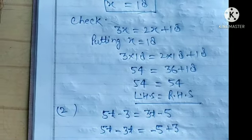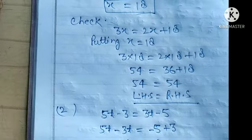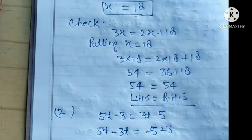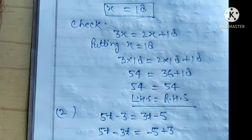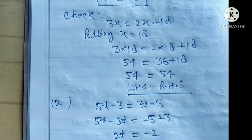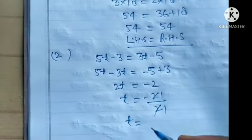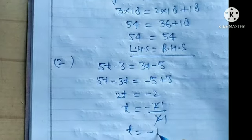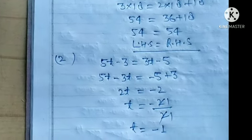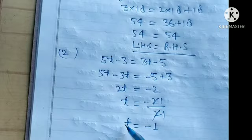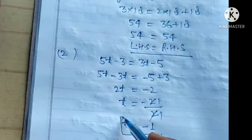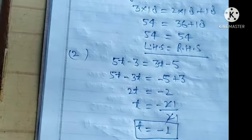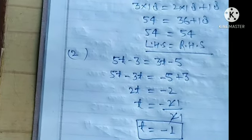t is equal to minus 2 upon 2. Dividing, you get t is equal to minus 1. This is your answer, the solution of the equation.